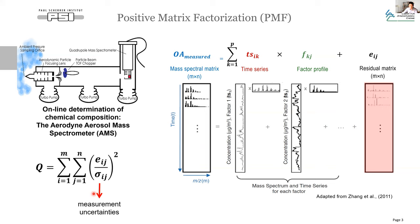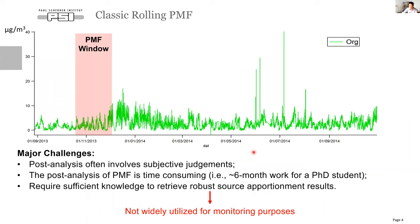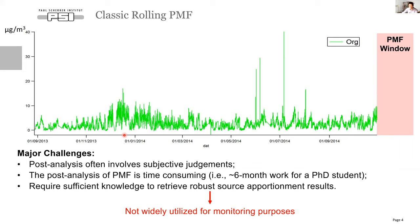Mathematically, the PMF model tries to minimize the Q value to get the solution with minimum residuals. In recent years, PMF has been improved in many aspects to get more robust source apportionment results. For instance, Kananoko et al. in 2021 developed the rolling PMF together with ME2 to enable the source profile to adapt to temporal variations of the sources, so-called rolling PMF.